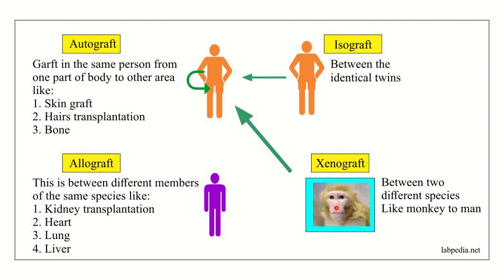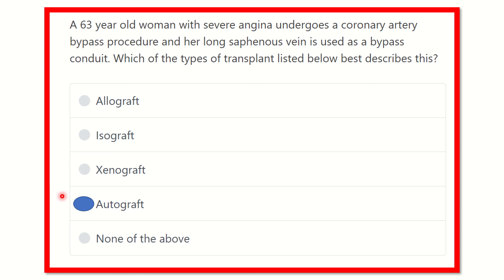Isograft is between two identical twins, and xenograft is between two different species, like monkey to man.